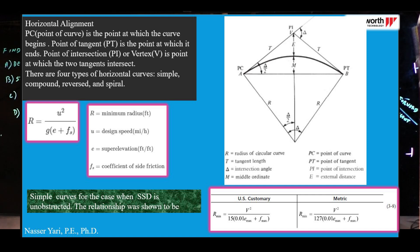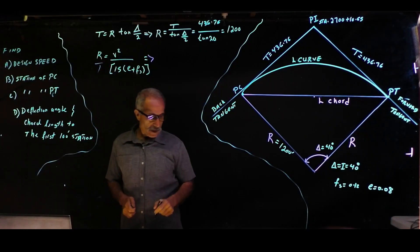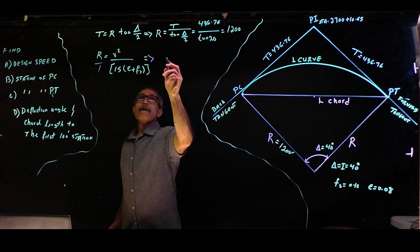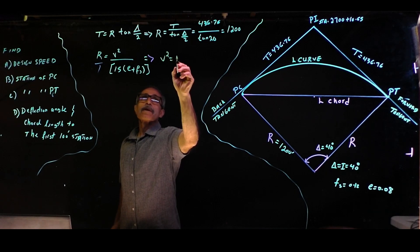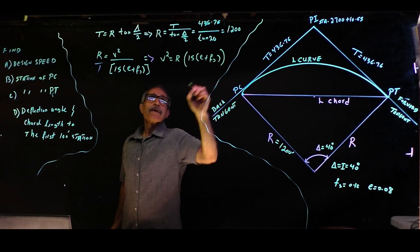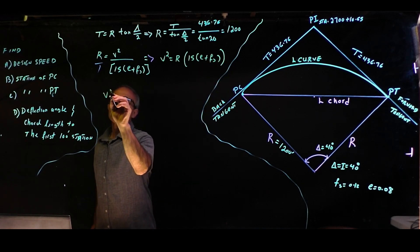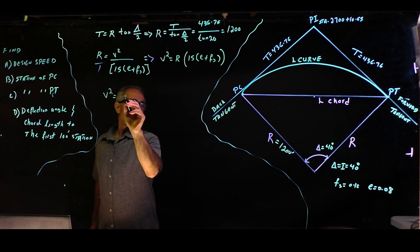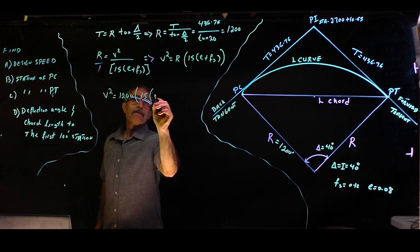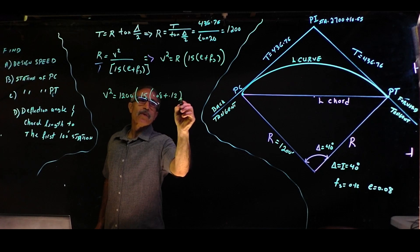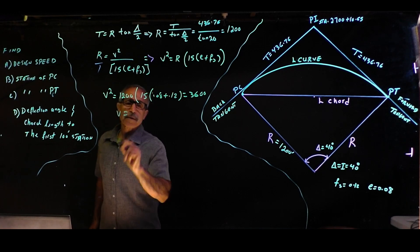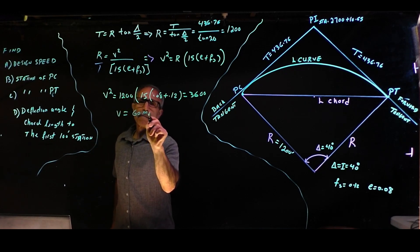Rearranging the speed formula gives us v squared equals radius times 15 times (e plus f). So v squared equals 1200 times 15 times (0.08 plus 0.12), which equals 3600. Taking the square root, our design speed comes out to 60 miles per hour.